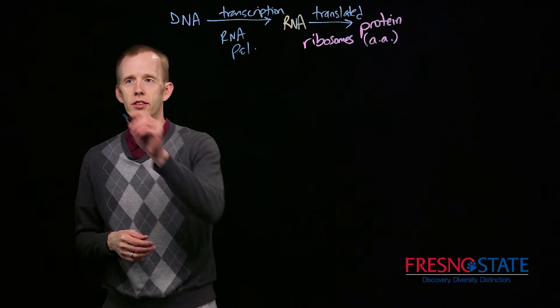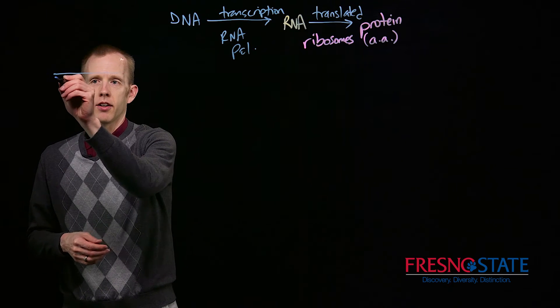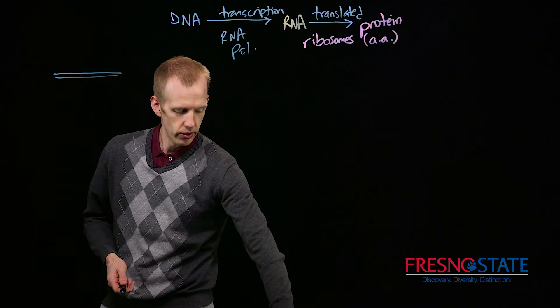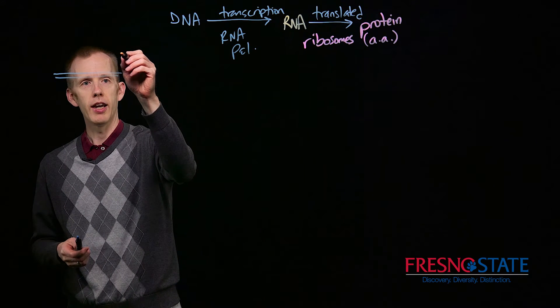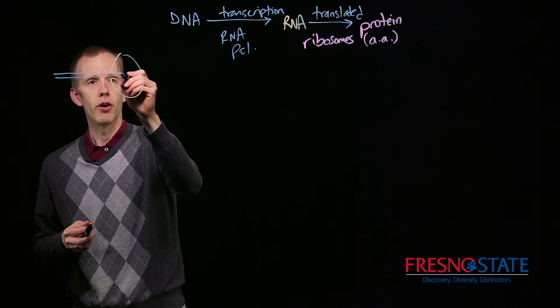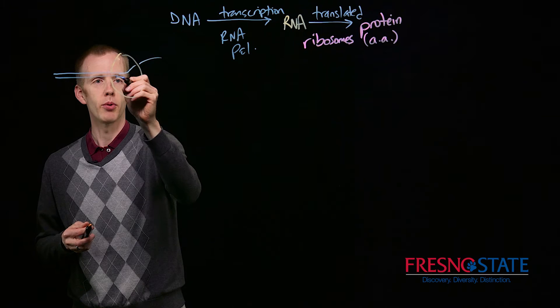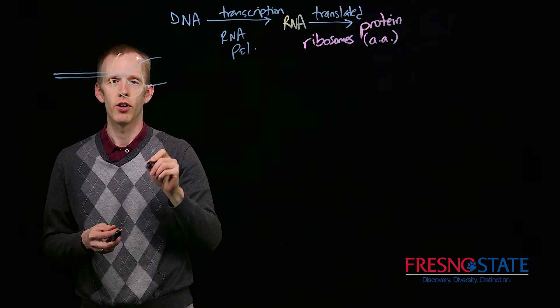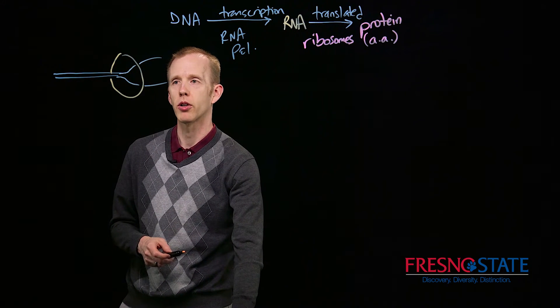After transcription initiates and RNA polymerase is located on a molecule of DNA, now we have to talk about the second step, which is elongation of the growing transcript, the messenger RNA molecule.